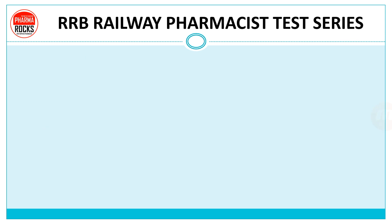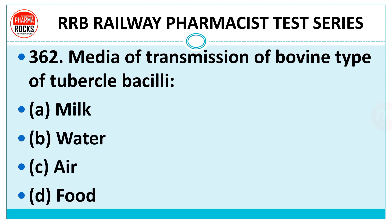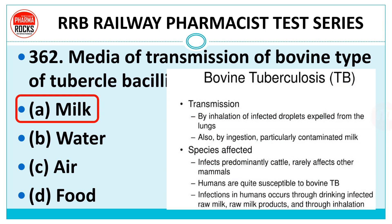Question 362: Media of transmission of bovine type of tuberculosis bacilli. Option A: milk. Option B: water. Option C: air. Option D: food. The right answer is milk. Bovine tuberculosis ka jo transmission hota hai, woh contaminated milk ke karan hota hai — transmission occurs by contaminated milk.